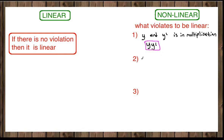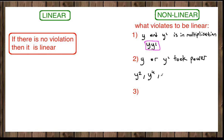Another category that violates linearity is when y or y-prime is raised to some power. For example, if you see y squared, y to the fourth, or y to the nth, it cannot be linear because y and y-prime cannot take powers. Similarly, if you see y-prime squared, y double-prime to the fourth, or y double-prime to the nth, it is nonlinear. If you see y or y-prime with any power, then it is nonlinear.